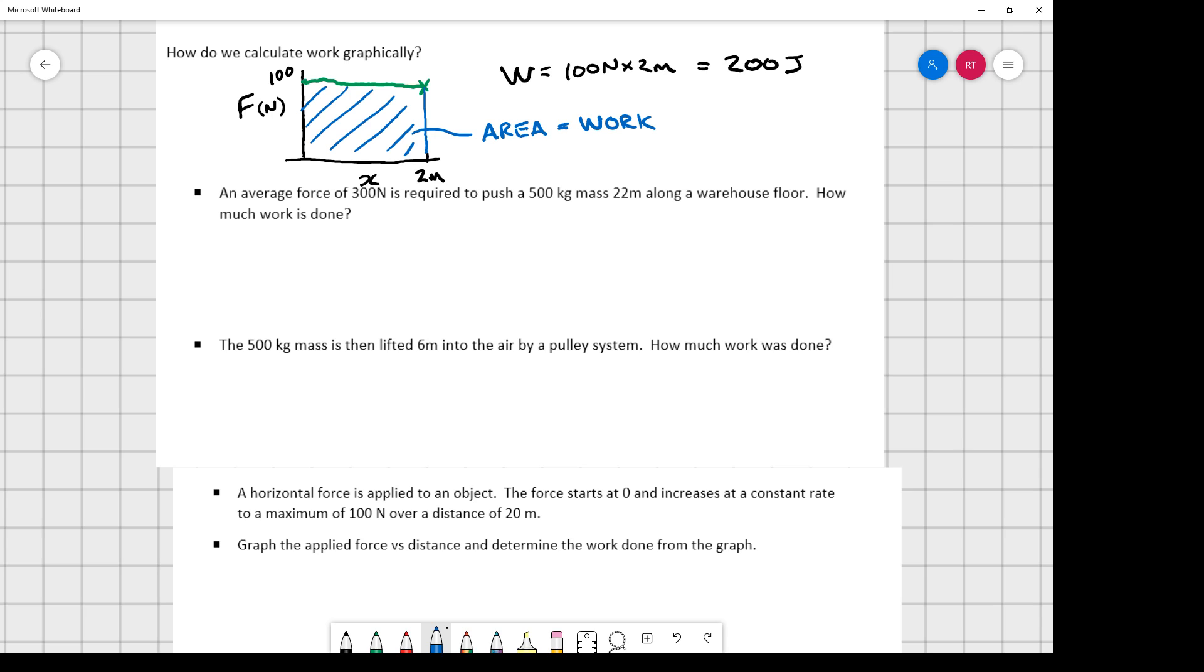So an average force of 300 newtons is required to push a 500 kilogram mass 22 meters along the warehouse floor, how much work is done. So work is equal to force times distance. Well, I have an average force of 300, and my distance is 22 meters, and that gives me 6600 newton meters or joules. Just note in this case that I did not need my 500 kilograms. That didn't come into play in this problem. So it's only a measure of how much force is needed and the distance that it moved.